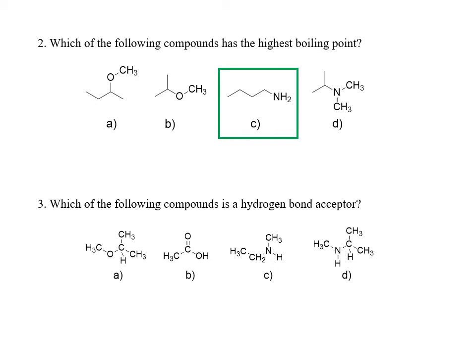Compound B has a carbonyl group, which is a hydrogen bond acceptor, but it also has an OH group — a hydroxyl group — making it a carboxyl group overall. Since hydrogen is bonded to oxygen, it is a hydrogen bond donor. Compound C has a secondary amine with an NH bond, another hydrogen bond donor. Compound D is also a secondary amine, again a hydrogen bond donor. So of the four, the only one that is a hydrogen bond acceptor is compound A.